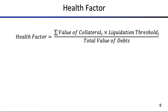The next terminology is the health factor. The health factor is defined as the sum of all the collateral you have times a liquidation threshold. The liquidation threshold is a value between zero and one, and it basically discounts for the collateral. If you take the sum of this collateral times the liquidation threshold and divide it by the total value of your debt, you end up with the health factor.